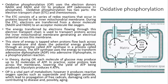Oxidative phosphorylation has two parts: the electron transport chain and chemiosmosis. The electron transport chain consists of a series of redox reactions that occur in proteins bound to the inner mitochondrial membrane. During the electron transport chain, electrons are transferred from donor molecules NADH and FADH to an acceptor molecule like oxygen, and the electrons are ultimately accepted by oxygen to form water.